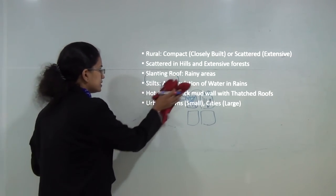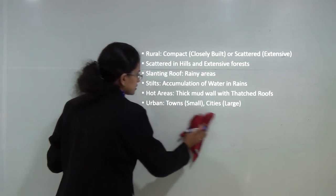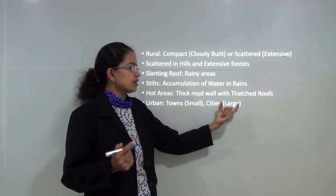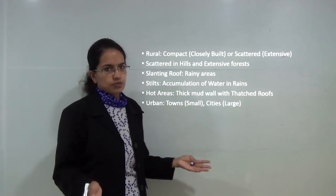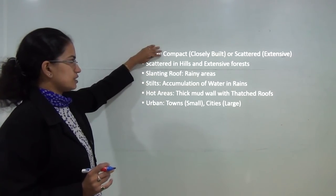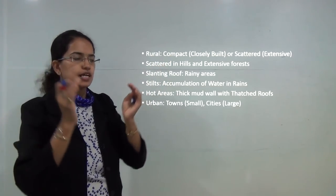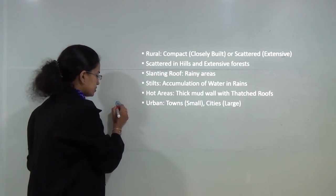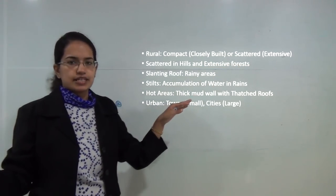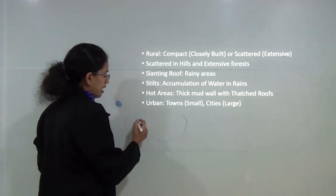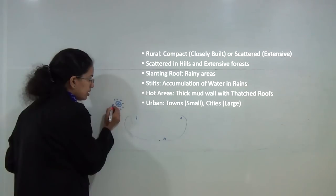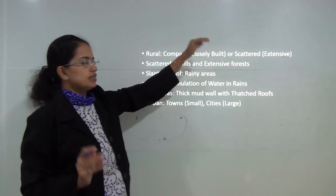Based on location, settlements can be classified as rural, which exist in villages, or urban. Urban settlements can be in small centers known as towns, or large centers known as cities; very large centers are known as metropolitans or conurbations when more than one town merges. Rural settlements can be compact — closely arranged, perhaps around a water source or well — or scattered, where houses are spread across a semi-arid area.